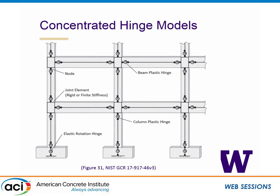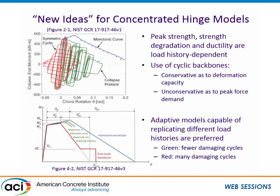What is most interesting and new is some recommendations for where we might move forward with concentrated hinge models. Looking at an image from that document, those concentrated hinges might be in a model of a structural system — some hinges at the base representing bar slip, hinges around a beam-column joint, and potential for explicitly or implicitly simulating the flexibility of the joint region. This is what your lumped plasticity model of this structure would look like.